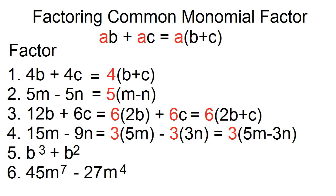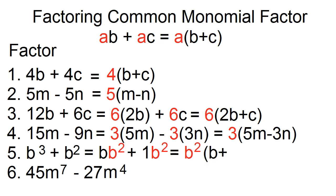Number 5. Factor B cubed plus B squared. B cubed can be factored as B times B squared, and B squared can be factored as 1 times B squared. The greatest common monomial factor is B squared, and the other factor is B plus 1.